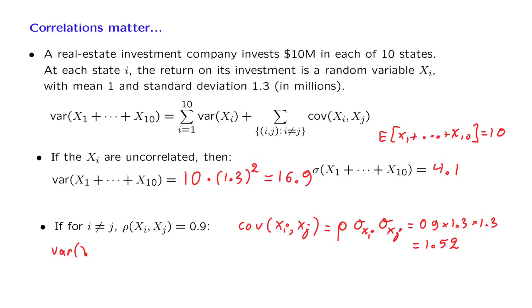And in that case, the variance of the sum, using this formula here, is going to be equal to 10 times the variance that you have in each state, which is 1.3 squared, plus, you have a bunch of terms here. How many terms? There's 90 of them. And each one of these terms is equal to 1.52. And the variance turns out to be 154.